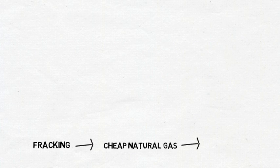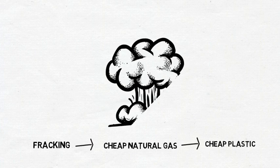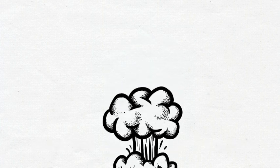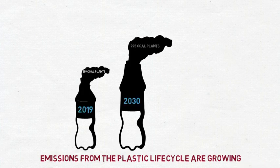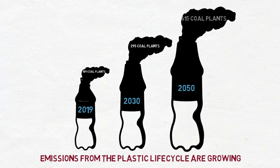Cheap natural gas from fracking in the United States is driving a plastic production boom. By 2030, emissions from every stage of the plastic life cycle will release as much carbon as 295 coal plants every year.